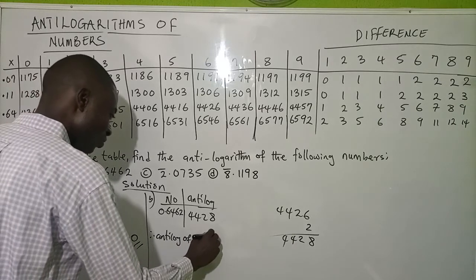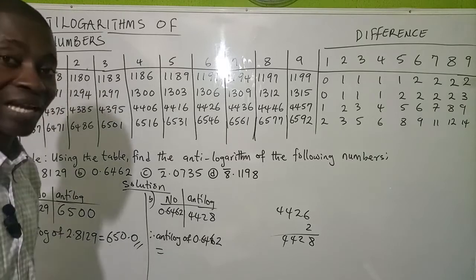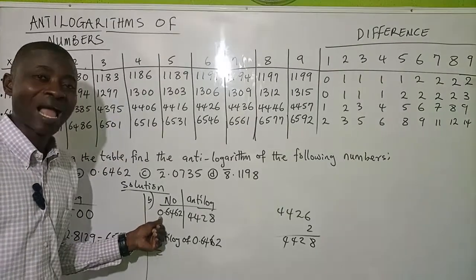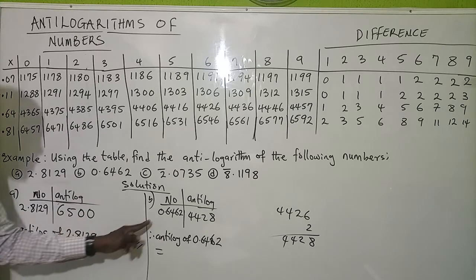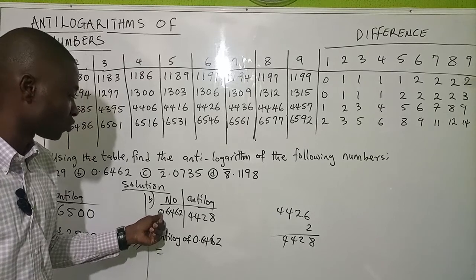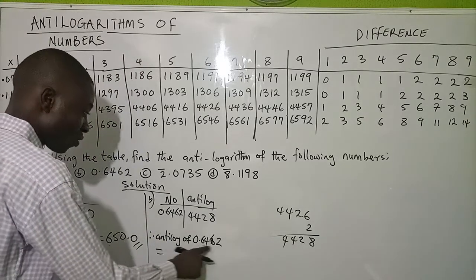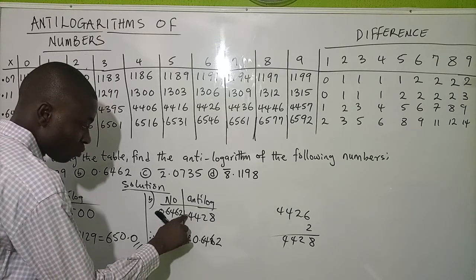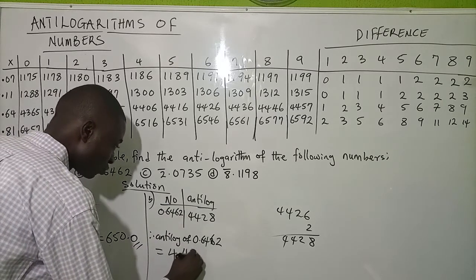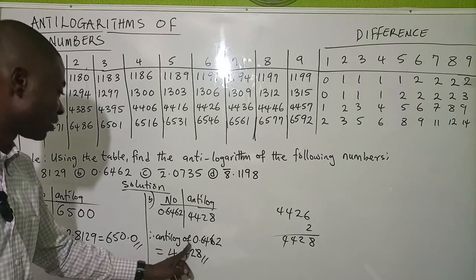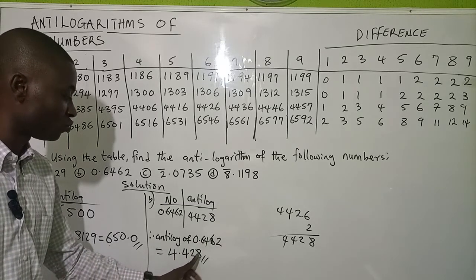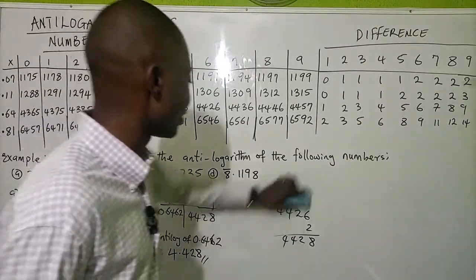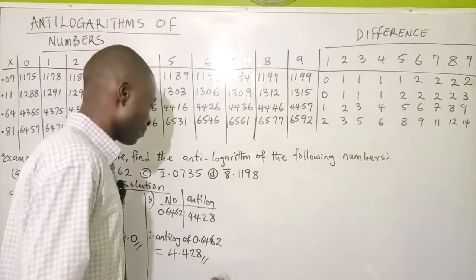Therefore the antilog of 0.6462: the whole-number part is just 0, so we add one to get 1. That means the decimal point moves one place, giving us 4.428. So the antilog of 0.6462 equals 4.428. That is our final answer — not difficult at all. All you need to do is practice regularly and you'll find these things are very simple.